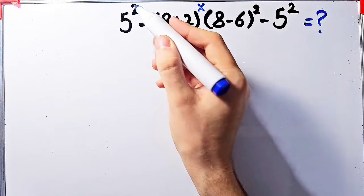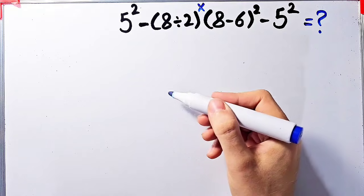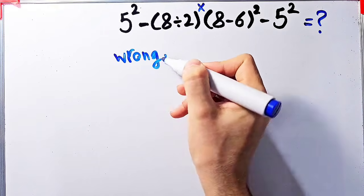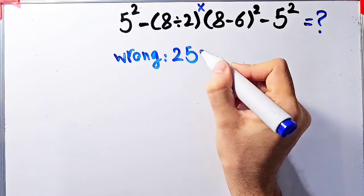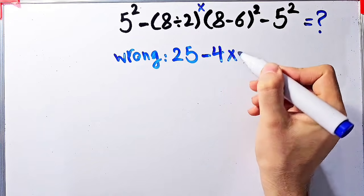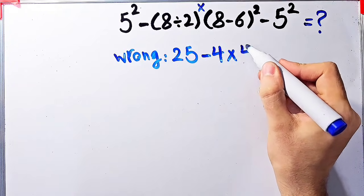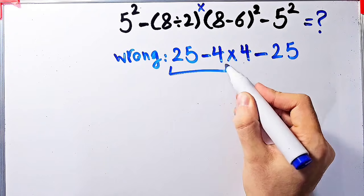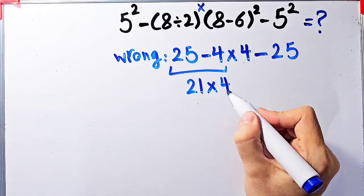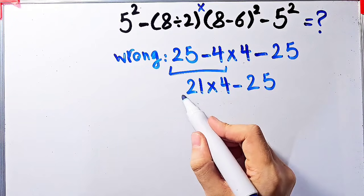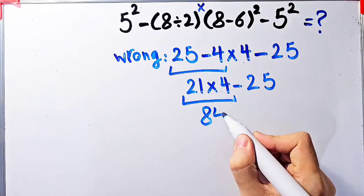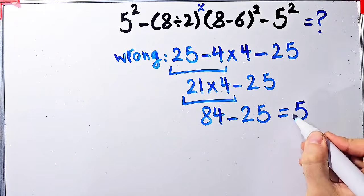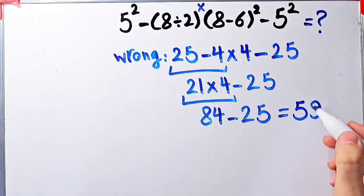In this question we have exponent, subtraction, parenthesis, multiplication, and division. Some people start from the left and don't pay attention to the priority of mathematical operations. They say five to the power of two equals twenty-five, twenty-five minus eight divided by two which equals four, then times eight minus six which equals two, and two to the power of two equals four, then minus five to the power of two which equals twenty-five. Twenty-five minus four equals twenty-one, twenty-one times four then minus twenty-five. They simplify twenty-one times four equals eighty-four, eighty-four minus twenty-five equals fifty-nine. They say the final answer equals fifty-nine, but this answer is definitely wrong.